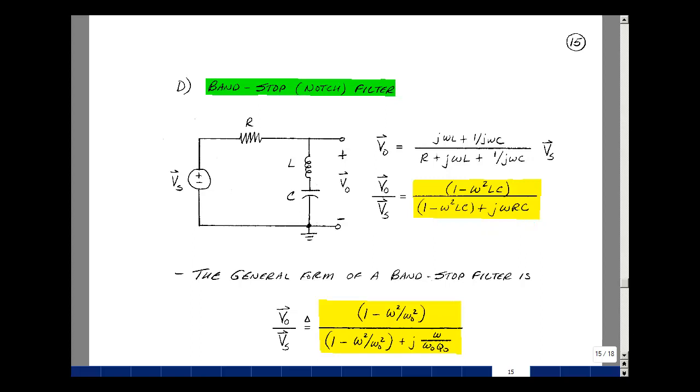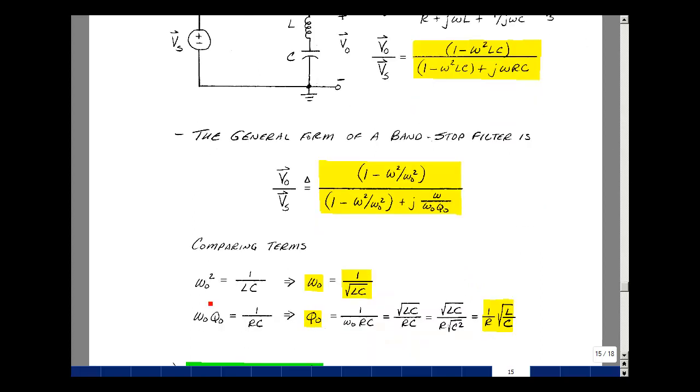The general form of a band stop filter looks like this. It's 1 minus ω² over ωₙ² divided by 1 minus ω² over ωₙ² plus jω over ωₙQₙ. We're factoring our equation into two constants, ωₙ and Qₙ. And if you do that, you can interpret the Bode plots and likewise the circuit.